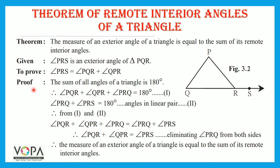Now let's learn to prove this. You know that the sum of all angles of a triangle is 180 degrees. So angle PQR plus angle QPR plus angle PRQ is equal to 180 degrees. This is statement number 1. Now, an exterior angle and its adjacent angle form a linear pair of angles, so their sum is 180 degrees.